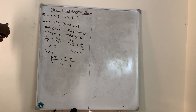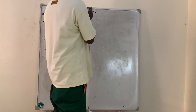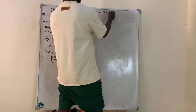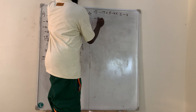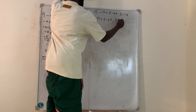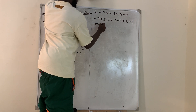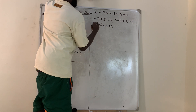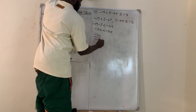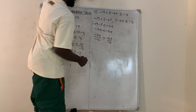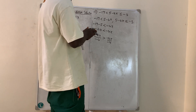Moving to question number 12: -19 < 5 - 4x ≤ -3. Separating: -19 < 5 - 4x, and 5 - 4x ≤ -3. For the left part: -19 - 5 < -4x, so -24 < -4x. Dividing by -4 changes the sign: 6 > x, meaning x < 6.